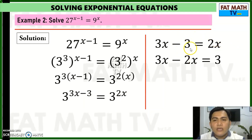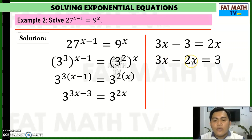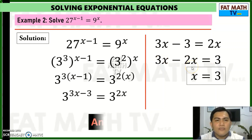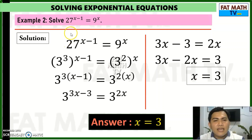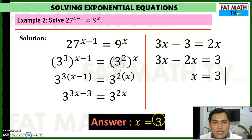Transferring 2x to the left gives negative 2x, and transferring negative 3 to the right gives positive 3. Then 3x minus 2x is x, so x equals 3. The value of x that satisfies this exponential equation is x equals 3. We can verify that.